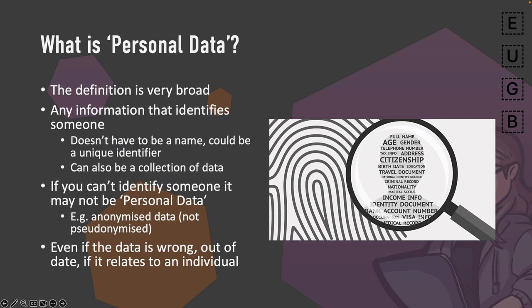GDPR defines something called personal data with a very broad definition — basically any information that identifies somebody. For example, their name, but it doesn't have to be their name. It could be a unique identifier, an IP address, or even a collection of data. For instance, if you say there's a cybersecurity YouTuber based in the UK whose name starts with an 'I,' you can see how that narrows things down. Company data is not the same as personal data since you can't use it to identify a person. Anonymized data also generally doesn't qualify. Importantly, even if the data is wrong or out of date, if it relates to an individual it is personal data subject to GDPR.